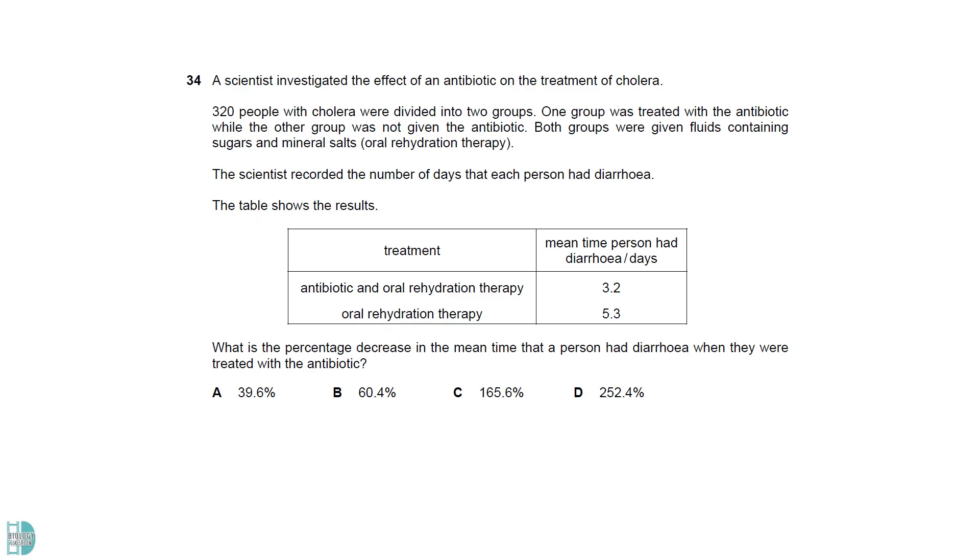The percentage decrease is calculated by the final, minus the initial, divided by the initial, times 100. The first treatment uses antibiotics on top of rehydration therapy, resulting in a further reduction compared to the second treatment. So, we consider this as the final value. It shows us the effect of antibiotics. It is about 39.6%.